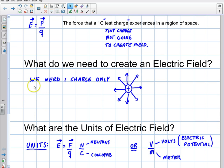So what do we need to create an electric field? We need only one charge. One charge can create a field. Just by that charge existing in space, it creates a field. So just by existing, this is going to affect the surrounding environment just because it exists.